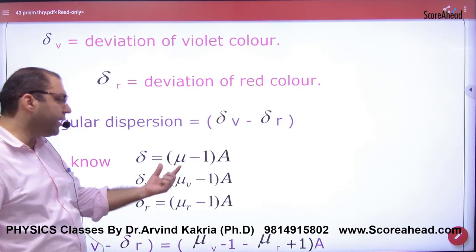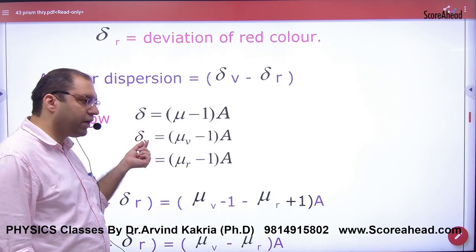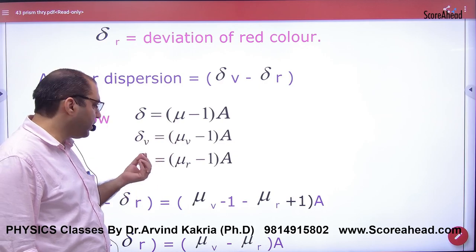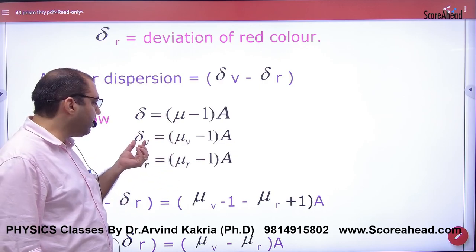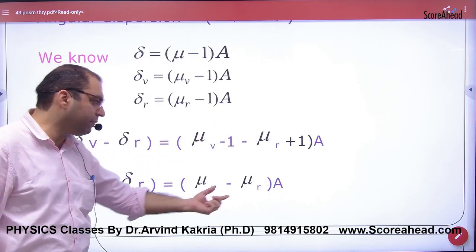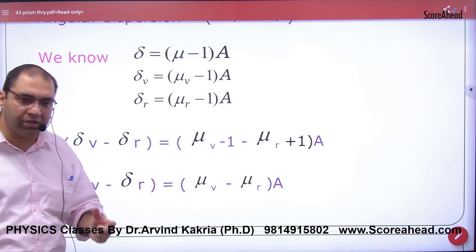Now I know that what is delta for small angles? μ minus 1 into A. Now put this formula for violet and for red. Delta violet, delta red. So the value of violet and red here, μ violet minus 1, μ red minus 1. This is the formula for angular dispersion.